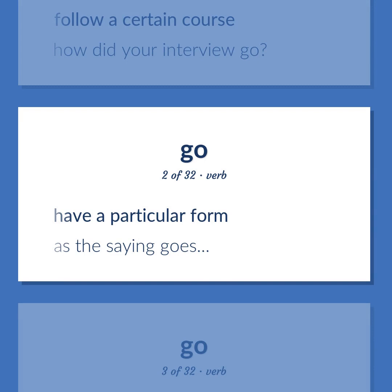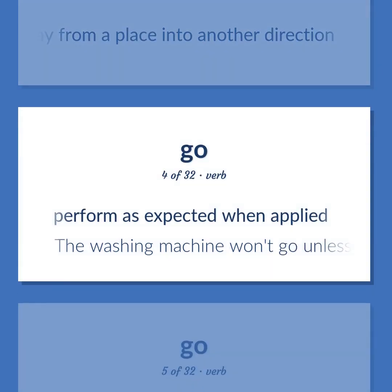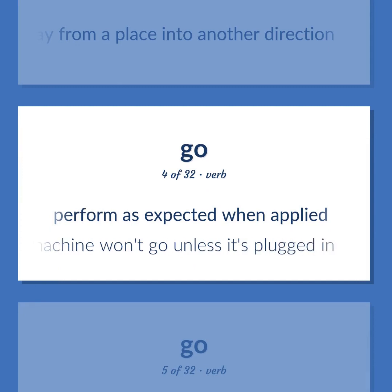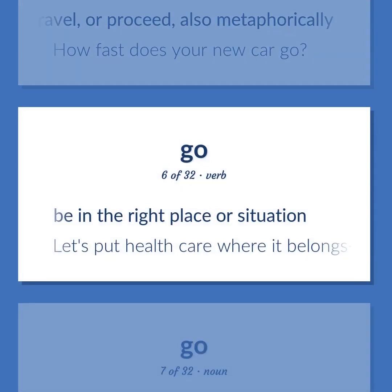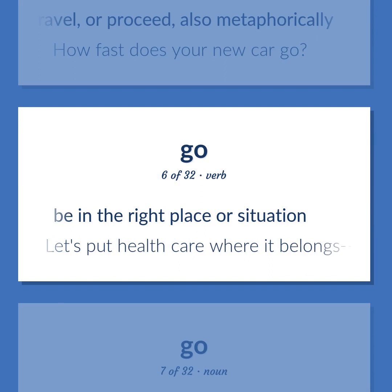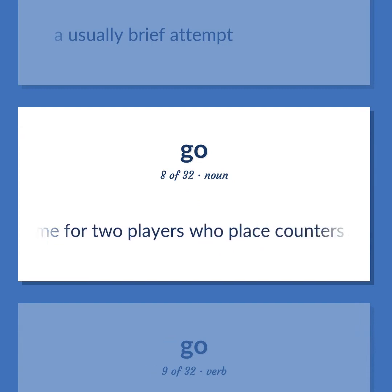Go: have a particular form — as the saying goes. Move away from a place into another direction. Perform as expected when applied — the washing machine won't go unless it's plugged in. Change location; move, travel, or proceed, also metaphorically — how fast does your new car go? Be in the right place or situation — let's put healthcare where it belongs, under the control of the government. A usually brief attempt. A board game for two players who place counters on a grid; the object is to surround and capture the opponent's counters.